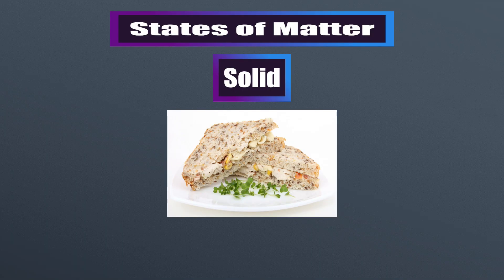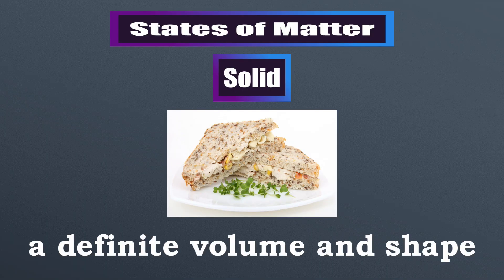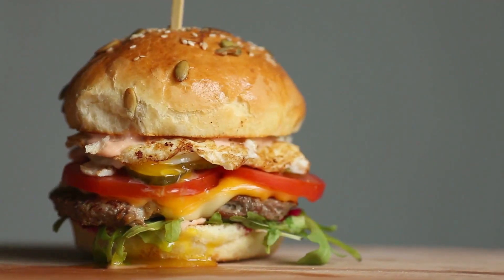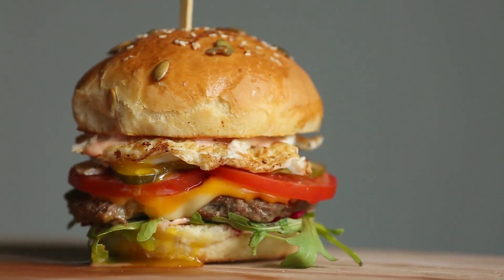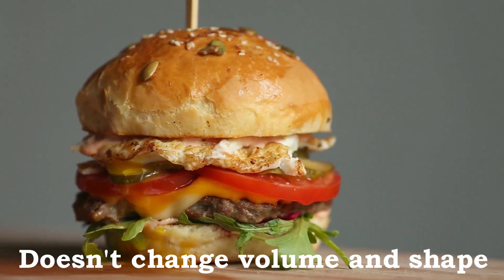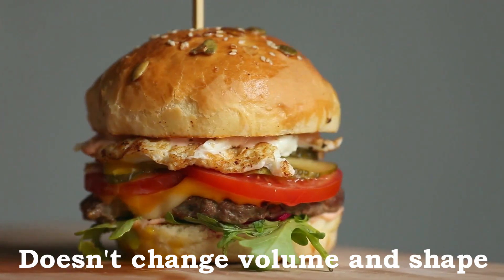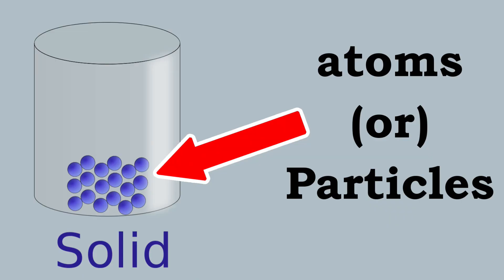And we have all three of these right in front of us, so why don't we look into each one? Let's look at the solid first, which is the sandwich. Solids have a definite volume and shape, meaning their volume and shape don't change. Looking at the sandwich, we can see this clearly — its volume and shape both stay the same.